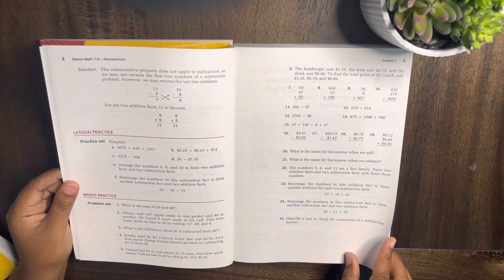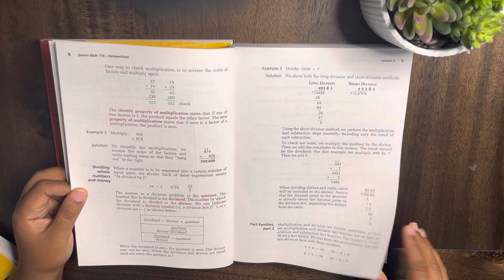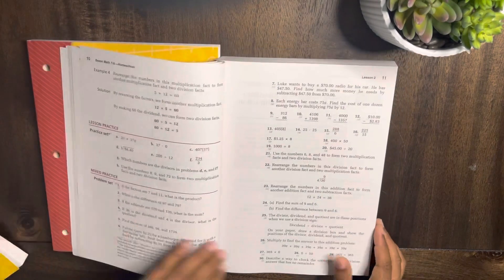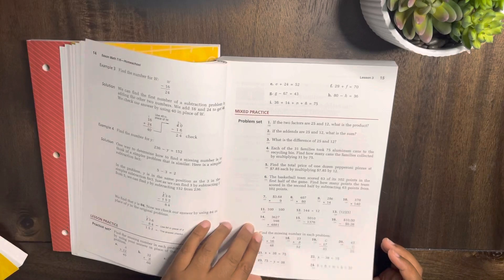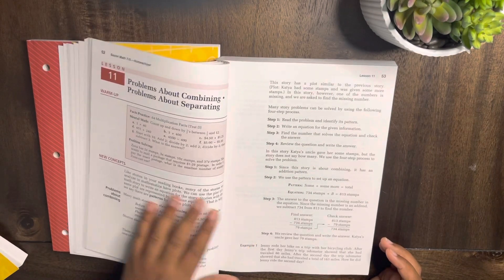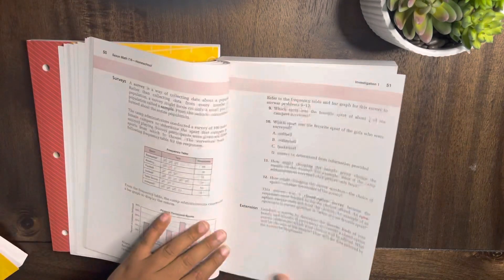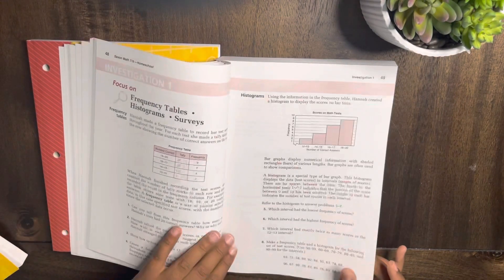So that is an example of one of the lessons, and then it keeps going on and on. After every 10 lessons there's an investigation. Let me see if I can get to an investigation for you. Here we go, investigation one.